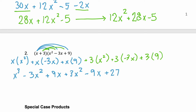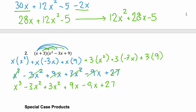Now we need to look at our like terms and group them together. We have x cubed — that's our only x cubed. For x squared: negative 3x squared and positive 3x squared cancel each other out. For x terms: 9x and minus 9x cancel each other out. And last, we have plus 27. So this binomial times trinomial simplified all the way down to x cubed plus 27.